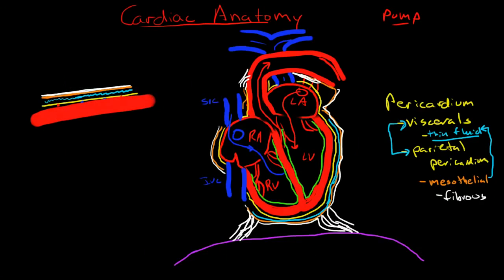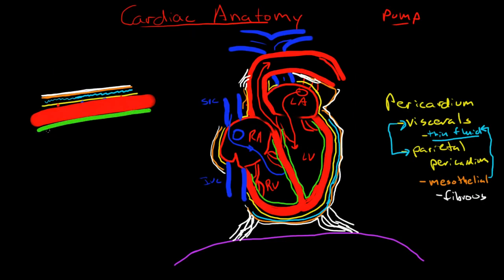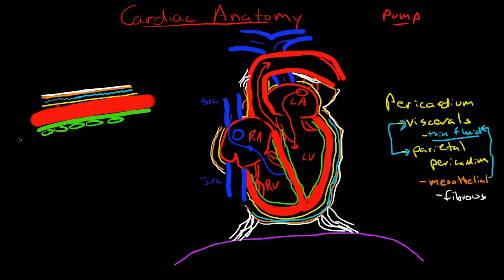On the inside of the myocardium we have the endocardium, which is a single layer of endothelial cells along with a thin basement membrane. The endocardium is a very thin layer — just one single layer of squamous epithelial cells with a basement membrane.